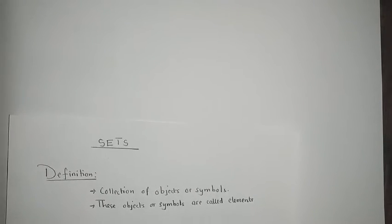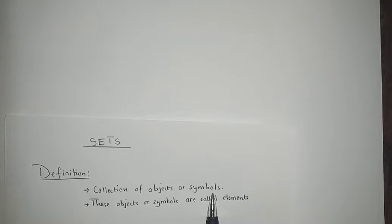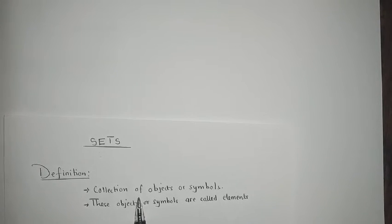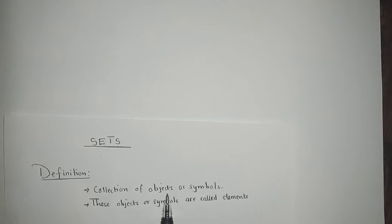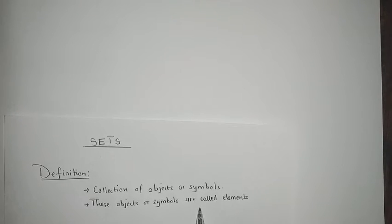A set is a collection of objects or symbols. It can be numbers, letters, items, or things — as long as they are put together or grouped, you call that a set. The objects or symbols found in a set are called elements.